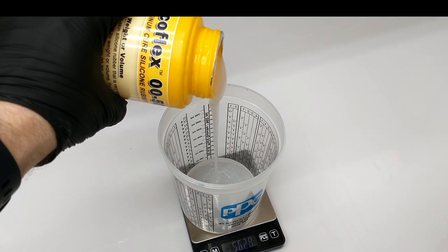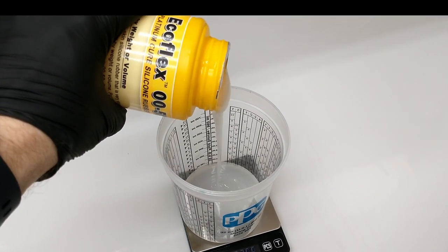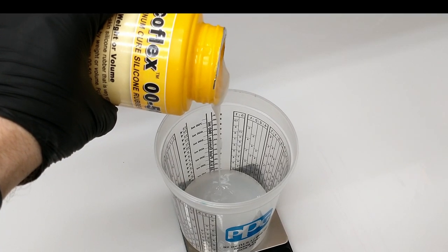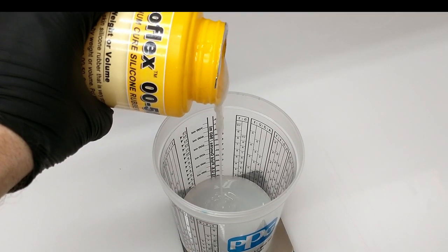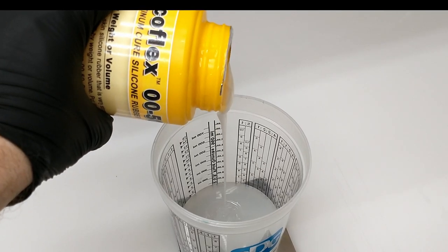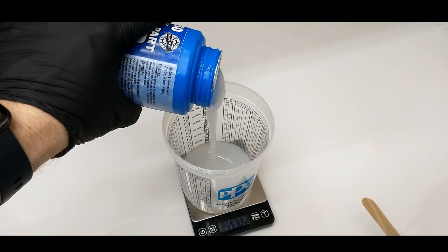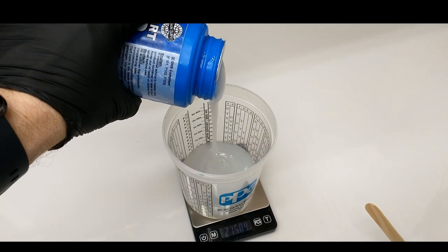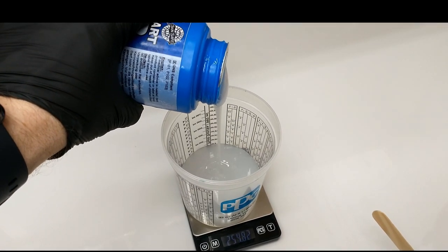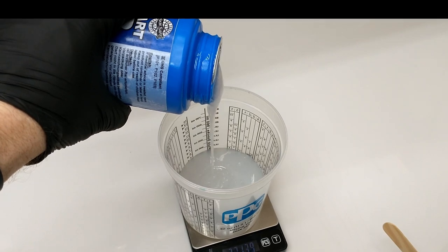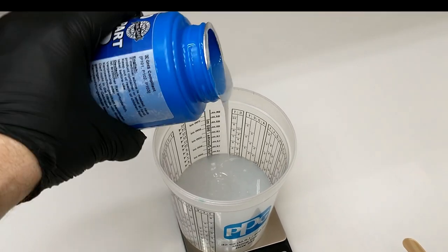Now I do this for a couple of reasons. First, by mixing all of my silicone all at once, I know that all of my colors are in cure and finish at exactly the same time. If I were to mix them separately, the first color would probably finish before the others.